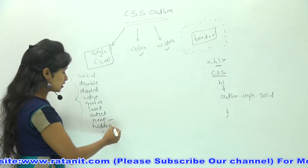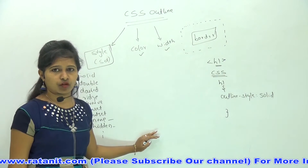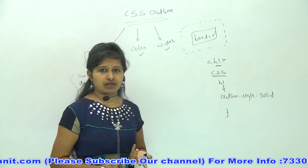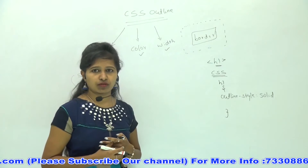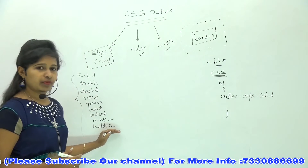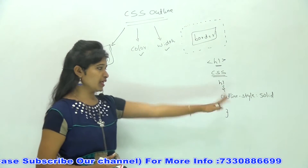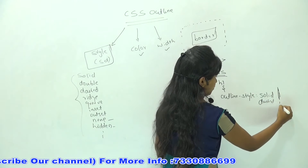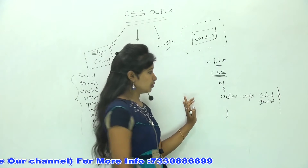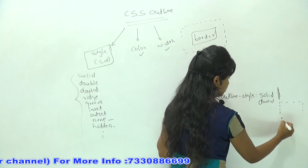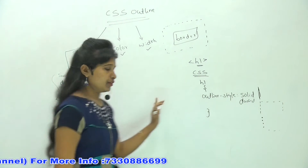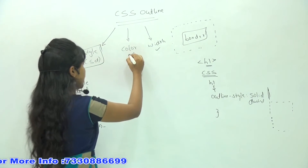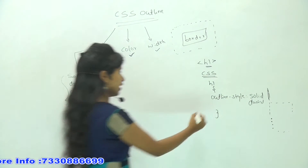None means the element won't have any outline. Hidden means the outline will be there but it is transparent — this is useful when you have an image and don't want to show any outline or border. Solid means it will be displayed in a solid way. Dashed means dashes will appear around the border, and dotted means dots will appear around it. Many other styles like groove and ridge are also available.